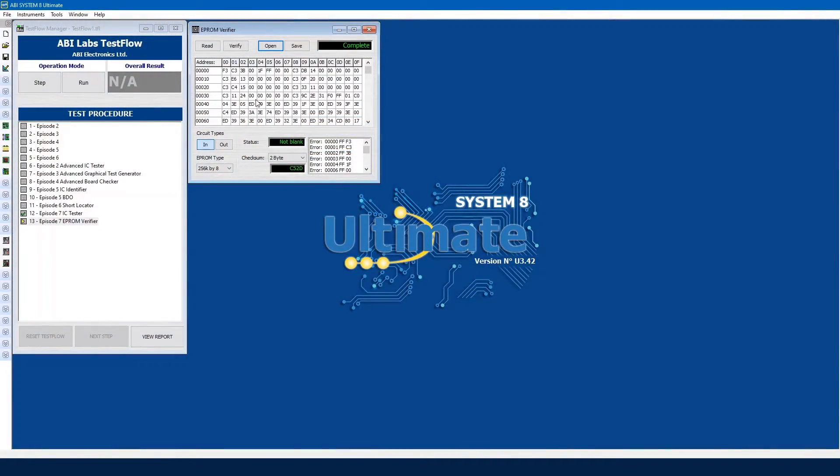Okay, as you can see, our saved data has now opened, so we can see all the data, all the checksum. Before we saw F, F, F, which is basically blank. Yep. There's no data there, but now we see all the information, and this is the information from our previously stored data, so from our previously tested good working board. Okay, fantastic.